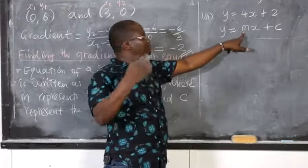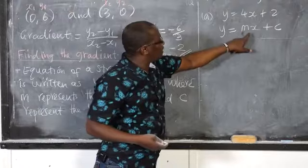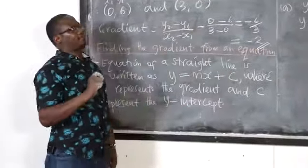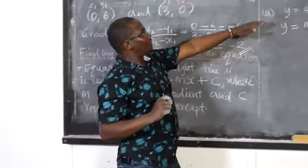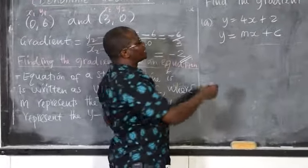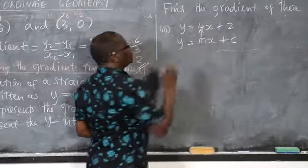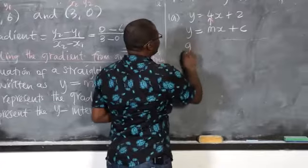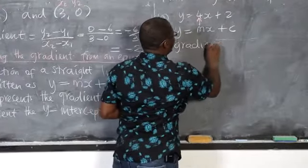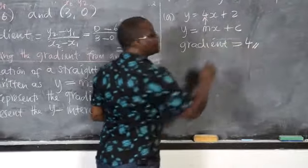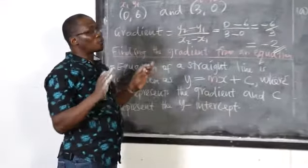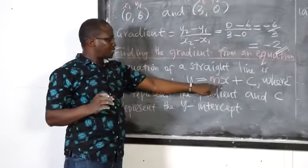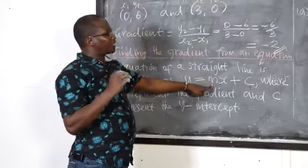Or you can simply look for the number in front of x — we call it the coefficient of x. So when you compare these two equations, you will see that 4 represents M. Therefore, your gradient equals to 4. As simple as that. You just need to use your eyes. M is the coefficient of x, meaning the number in front of x.